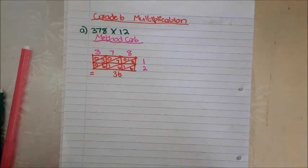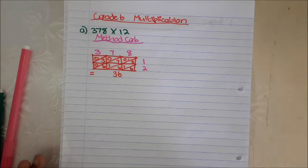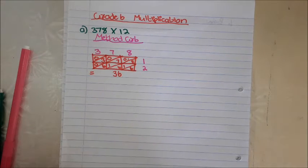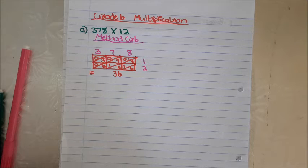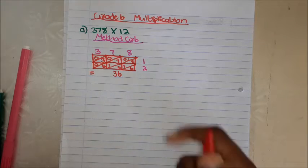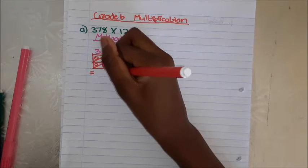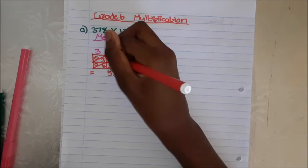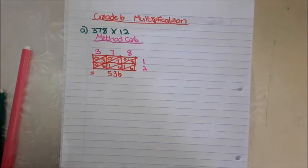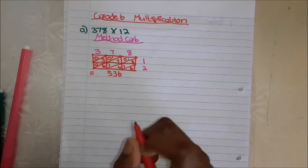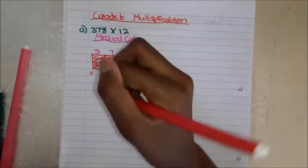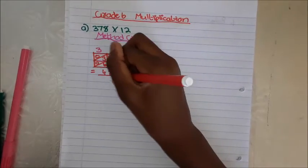Now 9 plus 6 is 15. So we put a 1 on top. Then 3 plus 1 is 4. So now here is the number.